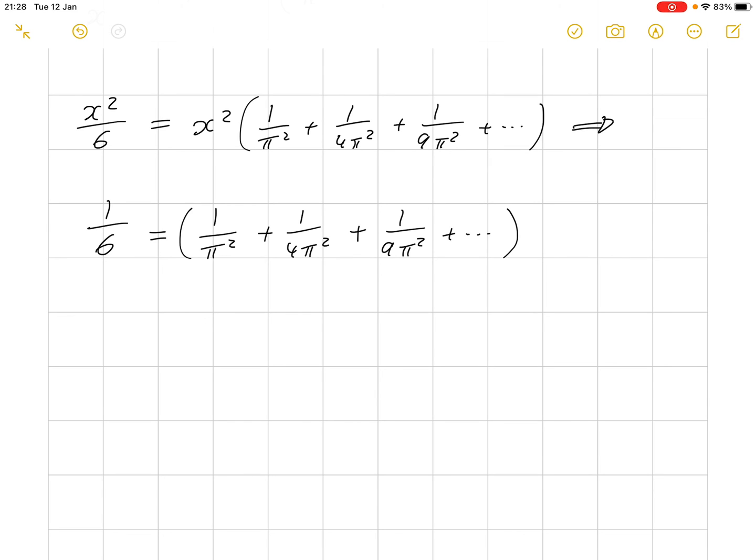And lastly, it follows then, if we multiply both sides by pi squared, we arrive at our final equation that pi squared over 6 is equal to 1 plus 1 quarter plus 1 ninth plus and so on. Which is, of course, equal to the sum from 1 to infinity of 1 over n squared.